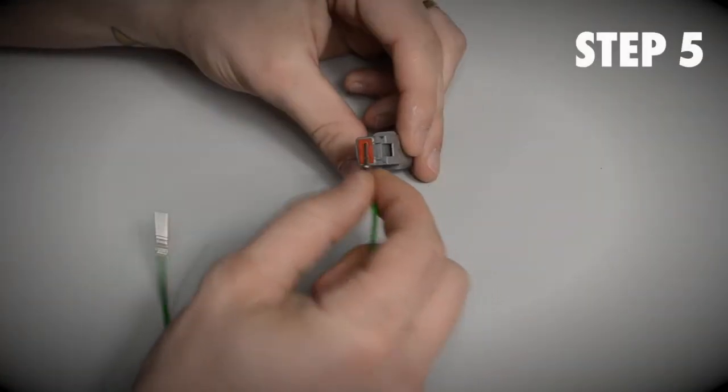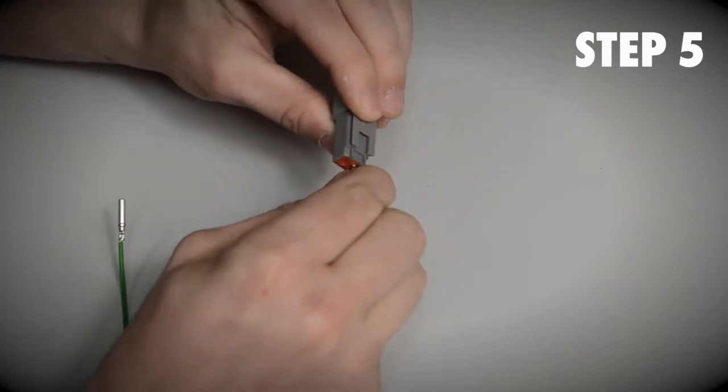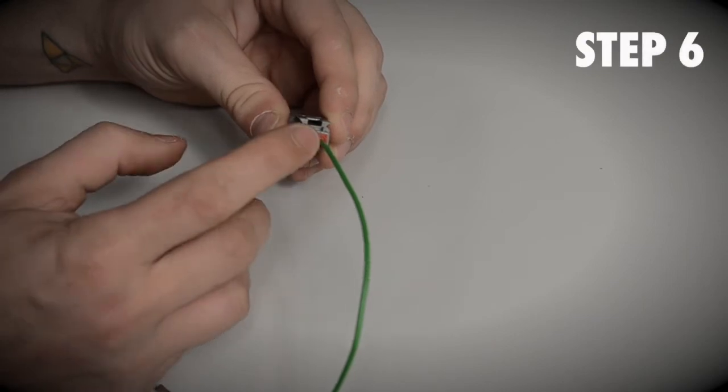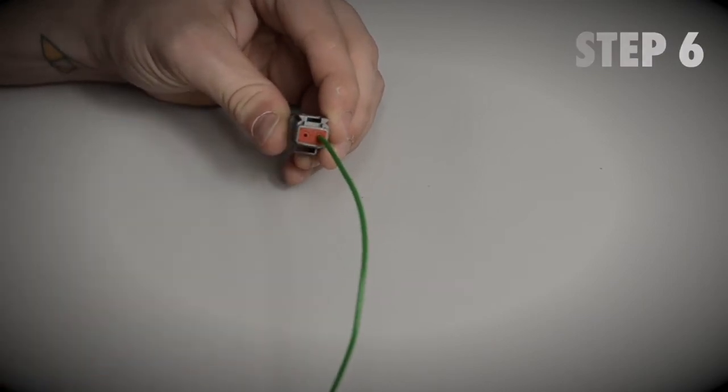Once crimped, insert the male pins into the socket from behind until you hear a click. Ensure the rubber installation is firmly in place.